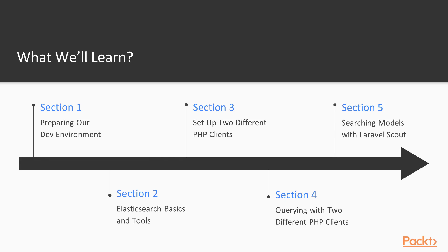As we make our way through the course, we'll progress through a number of sections. In the first section, we'll set up our development environment. What we're going to do is set up a Laravel Homestead virtual machine. Laravel Homestead provides a pre-built Vagrant virtual machine, which will provide all of the PHP, MySQL, and other software versions that we'll need to develop a Laravel application. We're actually going to install Elasticsearch on this Laravel Homestead virtual machine. Once we have this set up, it doesn't matter what operating system you run — you'll be able to use this virtual machine to run any of the command line commands that we'll need to run.